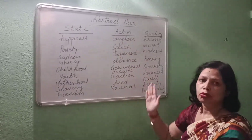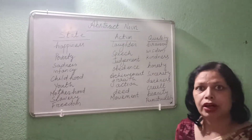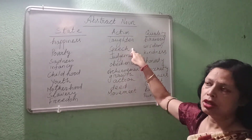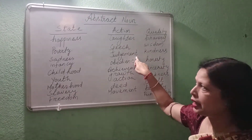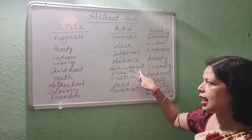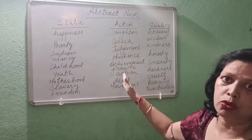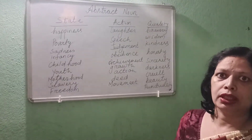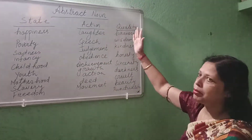Now come to the action part. What you are doing — your act can be converted into a noun. That is, a verb can be converted into a noun. That is Abstract Noun — action. Your laughter, your speech. You laugh and it becomes laughter. Speak — it becomes speech. Judge — judgment. Obey — obedience. Achieve — achievement. Grow — growth. Act — action. Do — deed. Move — movement. These are the nouns stating something about the action moment, about the stage you are at and the way in which you are progressing.